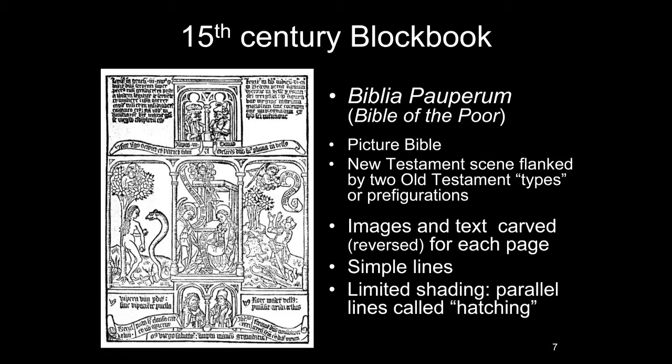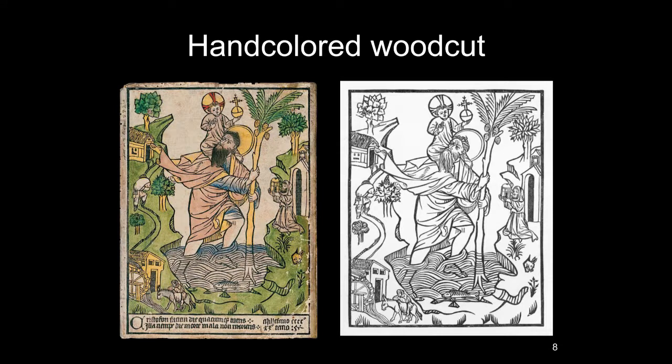If you look at the serpent tempting Eve, it has just some parallel lines going down the side — that's very simple shading. When you just have parallel lines to shade, we call that hatching. This is one of those single-leaf woodcuts; as you can see we have it here in both a black and white image and a colored image. The very earliest woodcuts, when they wanted to put color on them, were hand-colored — a person would basically use watercolor and fill in the blanks. If it has color in it, that's more expensive.